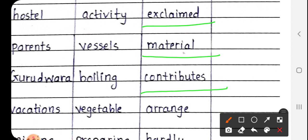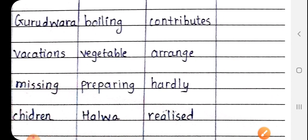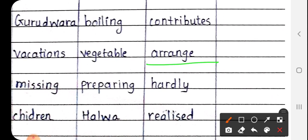Next is Contributes, C-O-N-T-R-I-B-U-T-E-S. Contributes means yogdan. Next is Arrange, A-double R-A-N-G-E. Arrange means vyavastha. Next is Hardly, H-A-R-D-L-Y. Hardly means mushkil se, with difficulty.